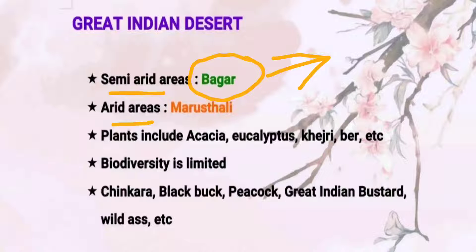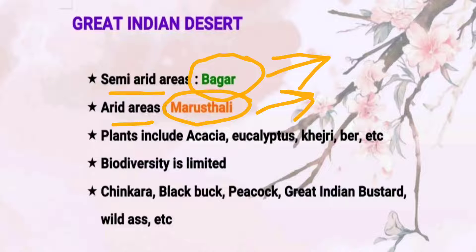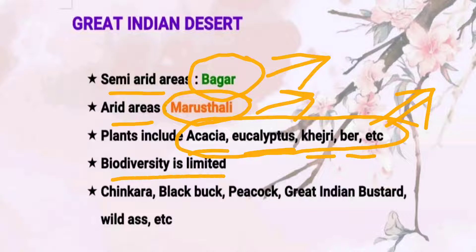The Great Indian Desert has a semi-arid part and an arid part. The semi-arid part is called the Bhagar and the arid part is called the Marusthali. You must have heard deserts referred to in Hindi as Marusthali — these are the completely arid parts of the desert where you can see no vegetation, no population, nothing at all. The plants present in that area include acacia and eucalyptus, all xerophytic vegetation.